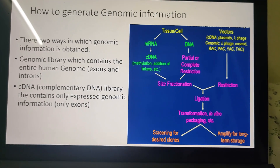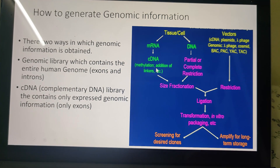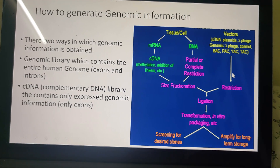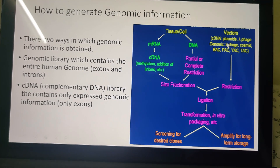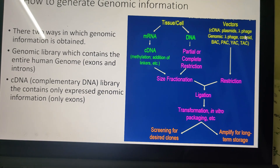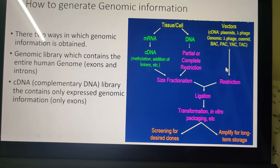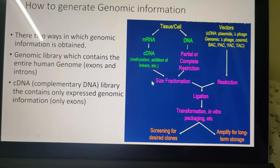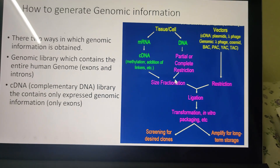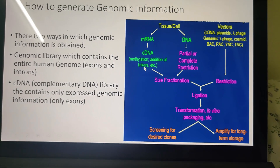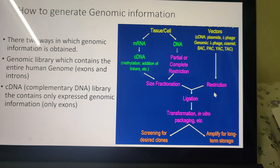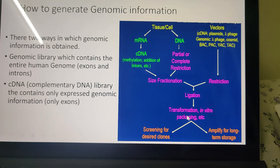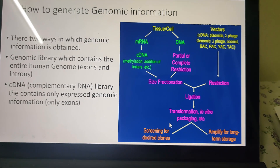Use the same restriction endonuclease to cut the cDNA as well as to cut the vector. For cDNA, we can use either a plasmid vector or lambda phage. You cut the vector by using the selected restriction endonuclease. The next step will be the same as seen previously — you add your fragments of DNA with the vector, ligation takes place, followed by transformation or in vitro packaging.